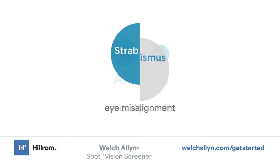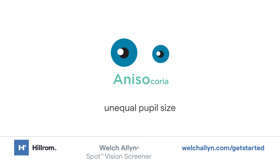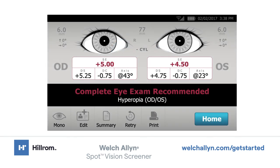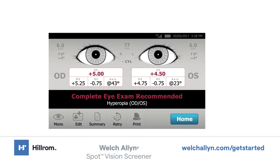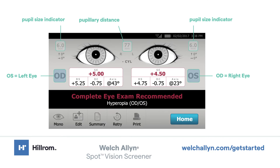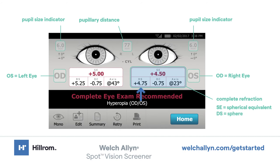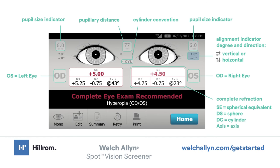Additional risk factors include strabismus (eye misalignment) and anisochoria (unequal pupil size). The Spot Vision Screener provides instant on-screen data and a printed summary report to explain the conditions detected. On-screen measurements include pupillary distance, pupil size indicator, right eye, left eye, complete refraction, spherical equivalent, sphere, cylinder, axis, cylinder convention, alignment indicator, degree, horizontal, and vertical.